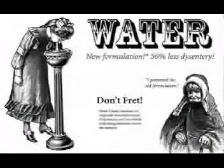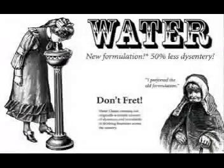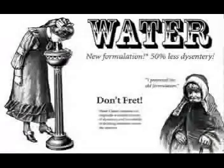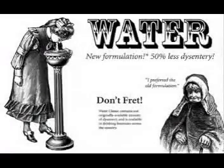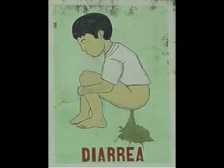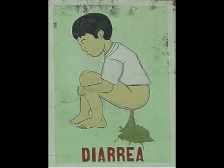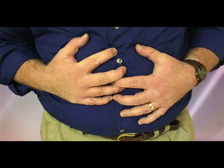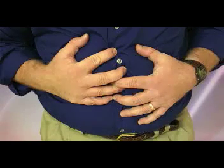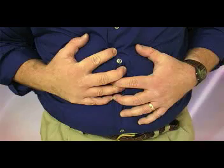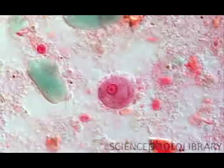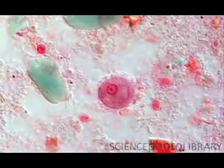Amoebic dysentery, which is also known as intestinal amoebiasis, is an infectious and chronic disease characterized by inflammation of the intestine, abdominal pain, and diarrhea with stools that often contain blood and mucus. Symptoms may occur then lie dormant for a while before recurring. In rare cases, the infection can also spread through the bloodstream and settle in the liver, lungs, brain, and other organs, causing much more serious problems.